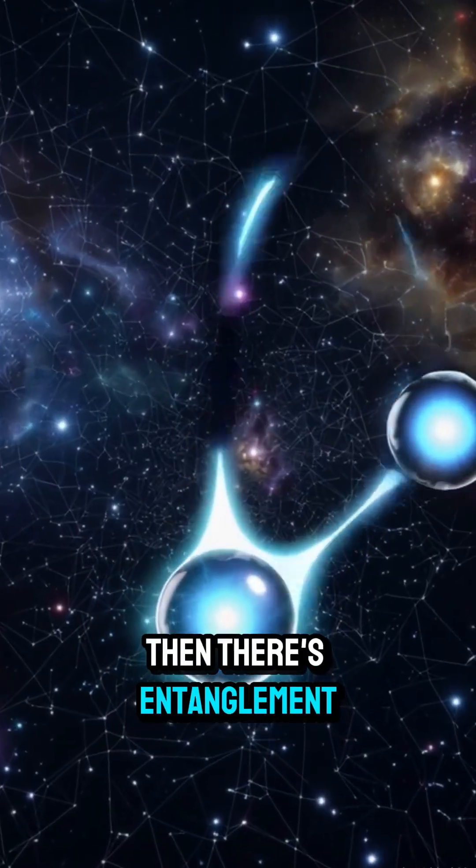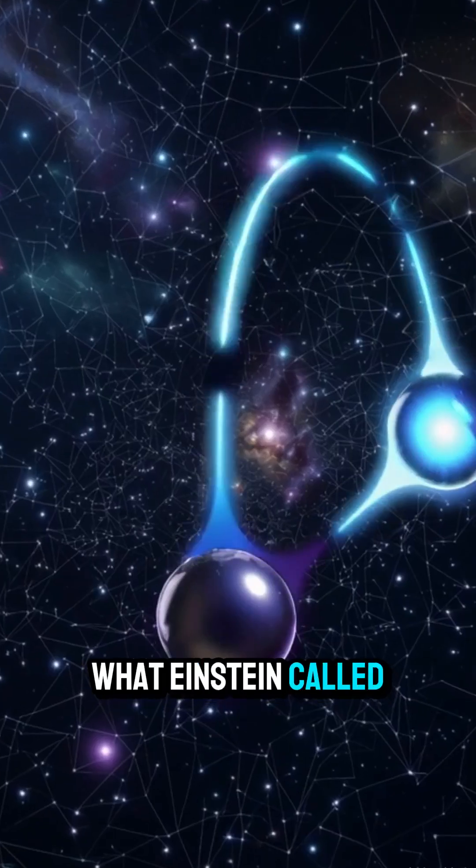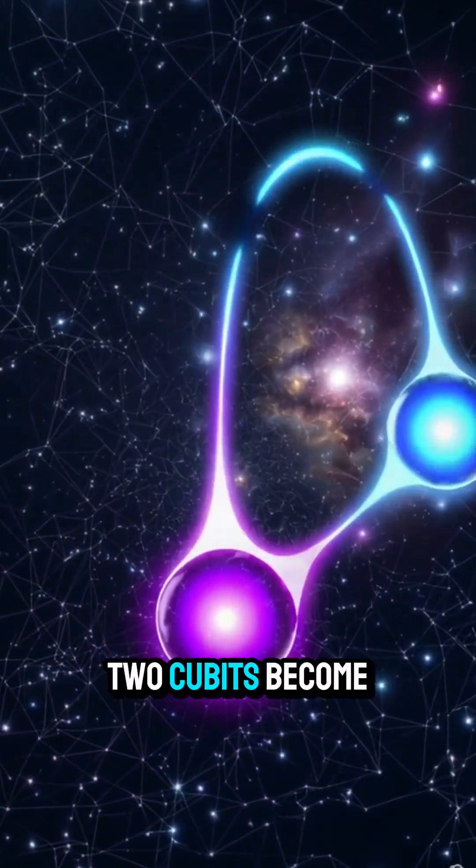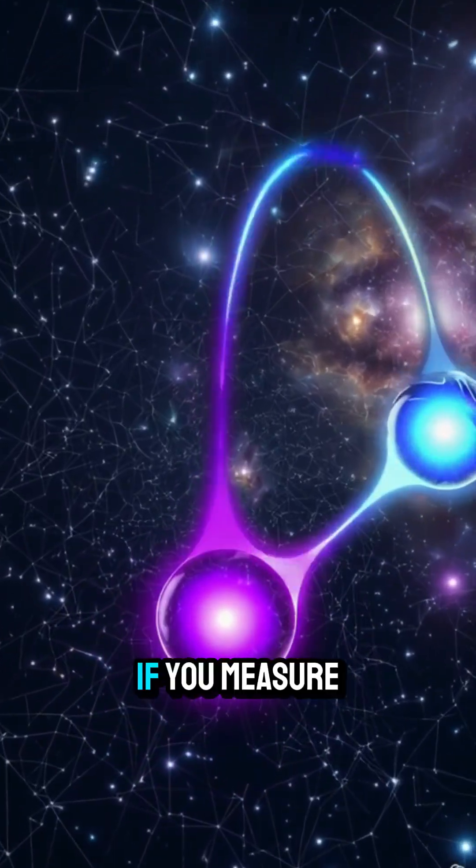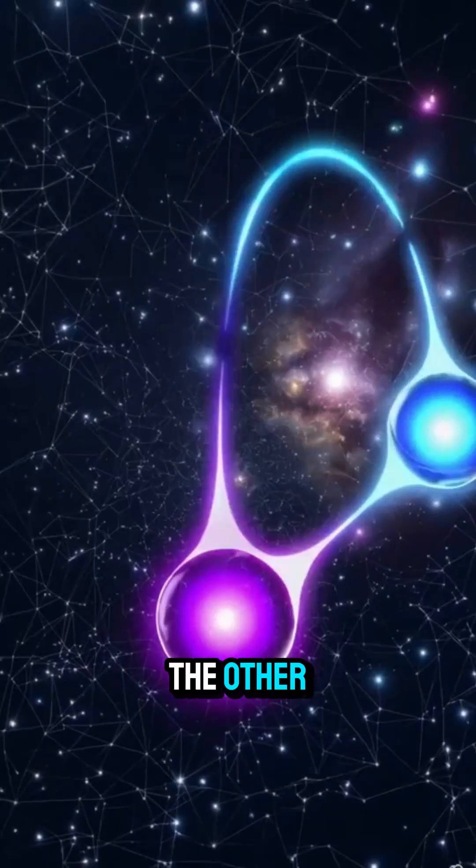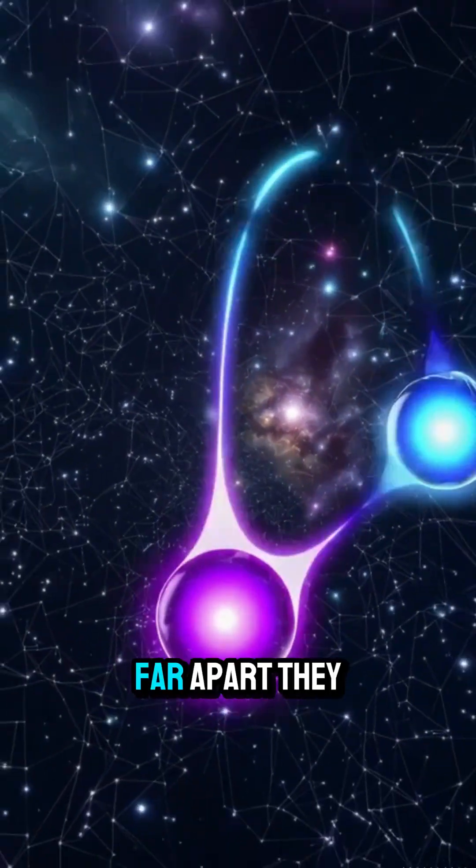Then there's entanglement, what Einstein called spooky action at a distance. Two qubits become linked. If you measure one, you instantly know the state of the other. No matter how far apart they are.